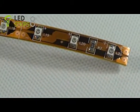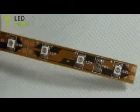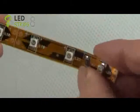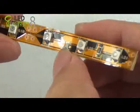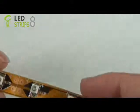Okay, now let's introduce how to cut and connect the strip. First, we can see that the strip is divided every three LEDs as a complete circuit, so it means you can cut it every three LEDs.